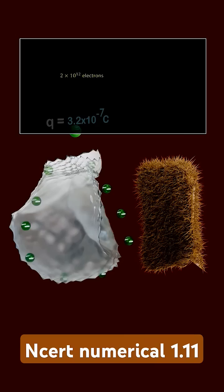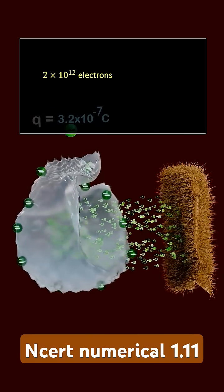After solving, we get approximately 2 into 10 to the power 12 electrons transferred from wool to polythene.